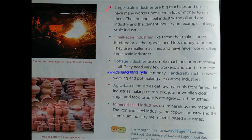Now let's see the different types of industries. First we have large-scale industries. Large-scale industries use big machines and usually have many workers. We need a lot of money to run them. The iron and steel industry, the oil and gas industry, and the cement industry are examples of large-scale industry. Large-scale industries have big machines, many workers, they need a lot of money and big places to run.